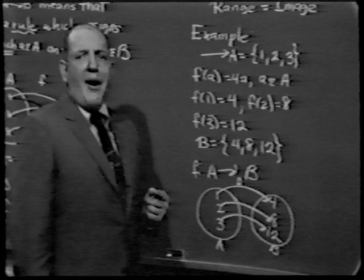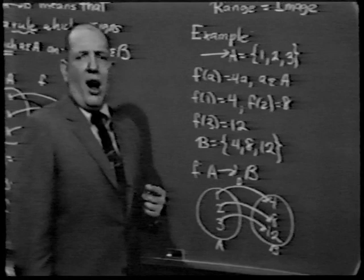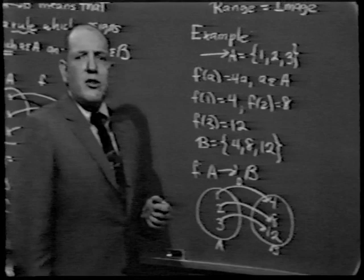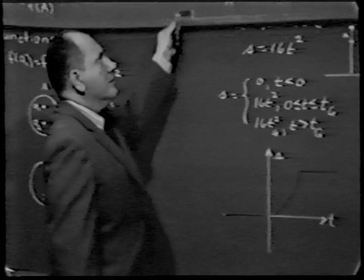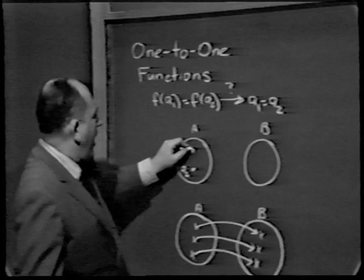A second feature of functions — independent of onto-ness — is something called a one-to-one function. Suppose f maps a₁ into a particular element of B, and maps a₂ into a particular element of B. There are two possibilities: f(a₁) and f(a₂) are different elements of B, or they are the same element.